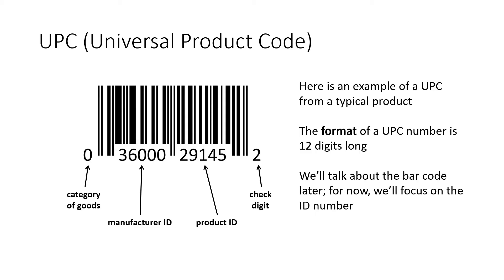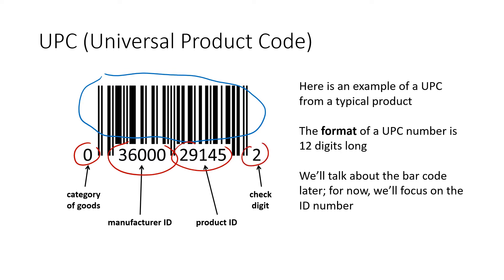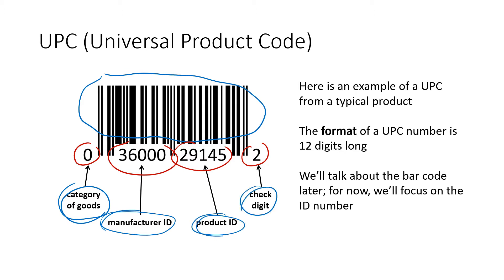A UPC code is something you're probably pretty familiar with. You see it on most objects in the grocery store, and the format of the UPC is the 12-digit number you see under the pattern of light and dark bars. The format is 12 digits long, with the category of goods written first, the manufacturer ID as the next five digits, the product ID as the next five digits, and then the 12th digit is a check digit.